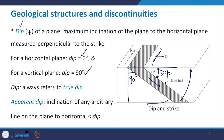Keep in mind that when I say dip, that means it is true dip — the term dip refers to true dip. Now if this is true dip, what is apparent dip? Apparent dip is the inclination of any arbitrary line on the plane to the horizontal. This apparent dip will always be less than the true dip.